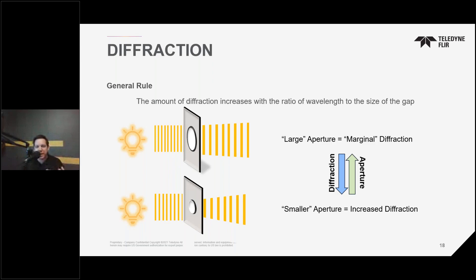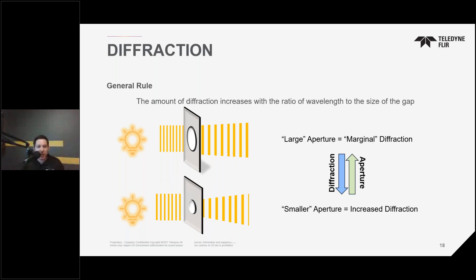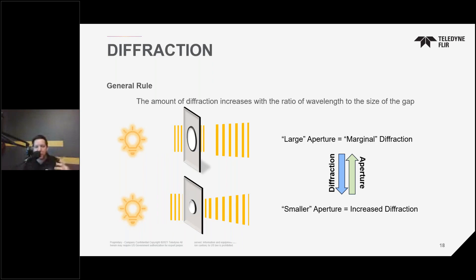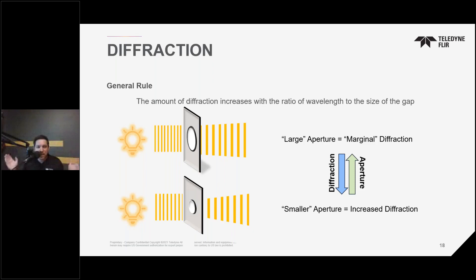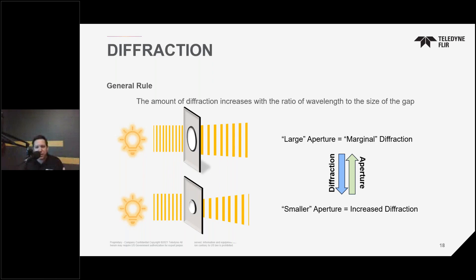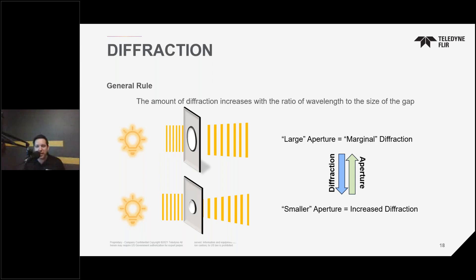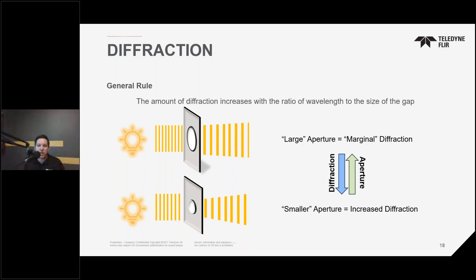This is where the topic of chromatic aberration and high-quality optics come into play. As different wavelengths pass through the lens material — and remember, we're talking about very wide bands of wavelengths — they're already misaligned due to different indices of refraction. Think of a straw in a glass of water that looks bent due to the index of refraction in the water. The same thing happens as light passes through a lens: due to different indices of refraction, you need to understand how those wavelengths propagate all the way from the world to the detector to ensure all the different wavelengths actually land on the detector.